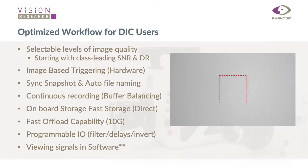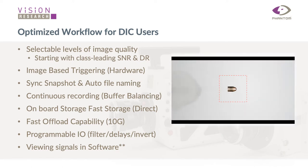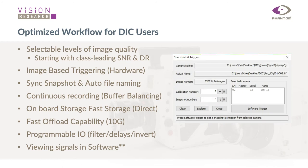We have an automatic way of triggering the camera, done entirely in hardware on the sensor. For example, when a bullet comes through your field of view, you can automatically trigger the camera within an inter-frame time. We also just released a feature called Sync Snapshot — a refined way of doing calibration shots for digital image correlation. Alongside that, we have Auto File Naming to conveniently and automatically save your TIFF stacks wherever you want, ready to be read into a third-party software.